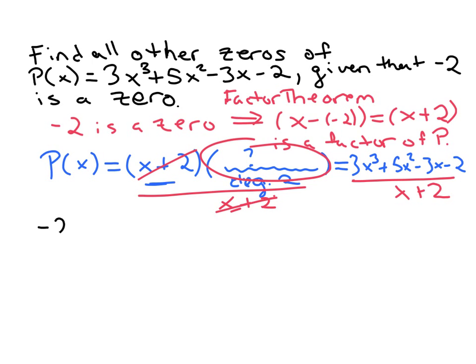So if we're dividing by x plus two, we put opposite signs, so put negative two in the box, and then the coefficients of P of x. So three, positive five, negative three, negative two, skip a line and draw a line, bring that first number straight down. So there's the three.